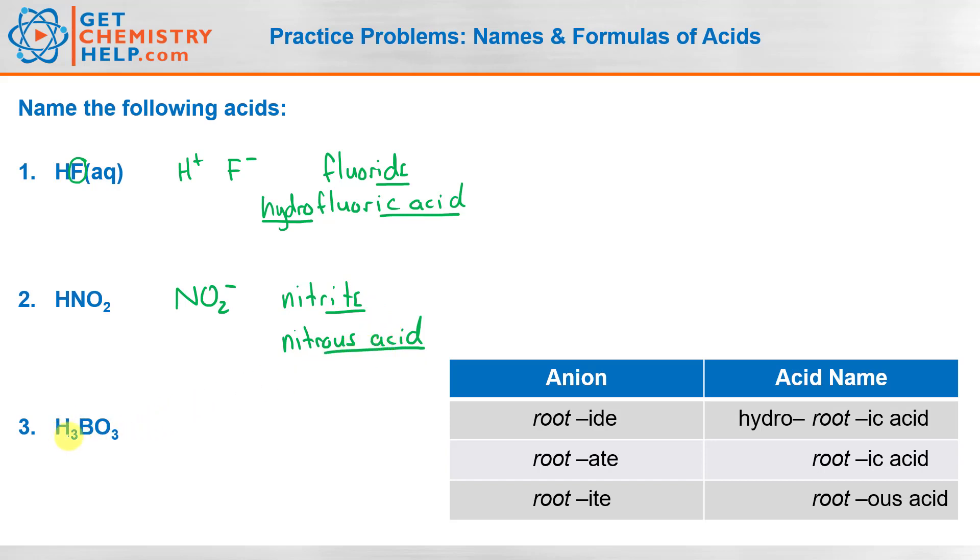How about this one, number three? So we have three H pluses, which means our anion must be BO3 with a three minus, because the three positively charged hydrogens indicates that the anion must be three negative.